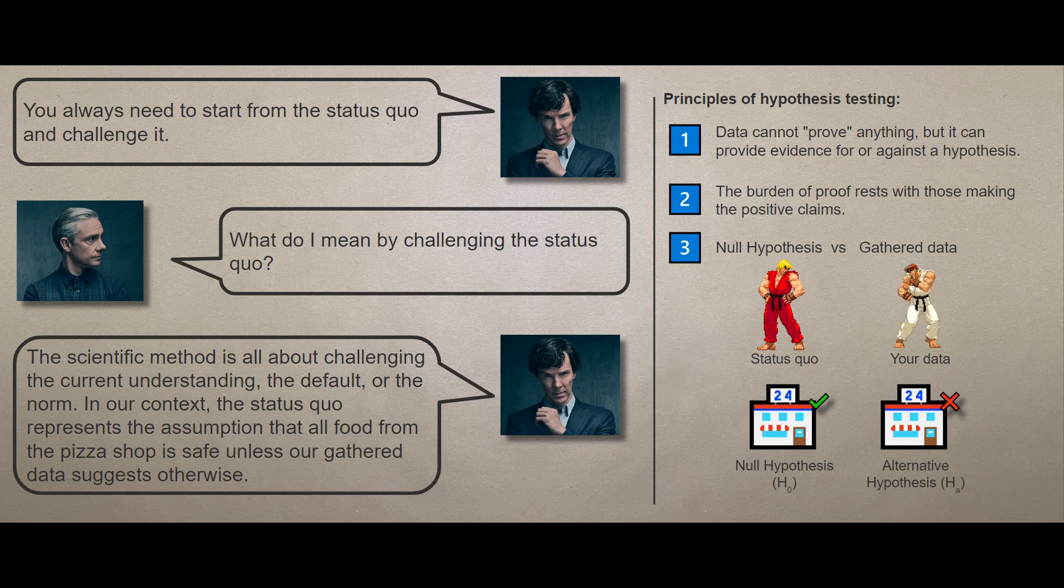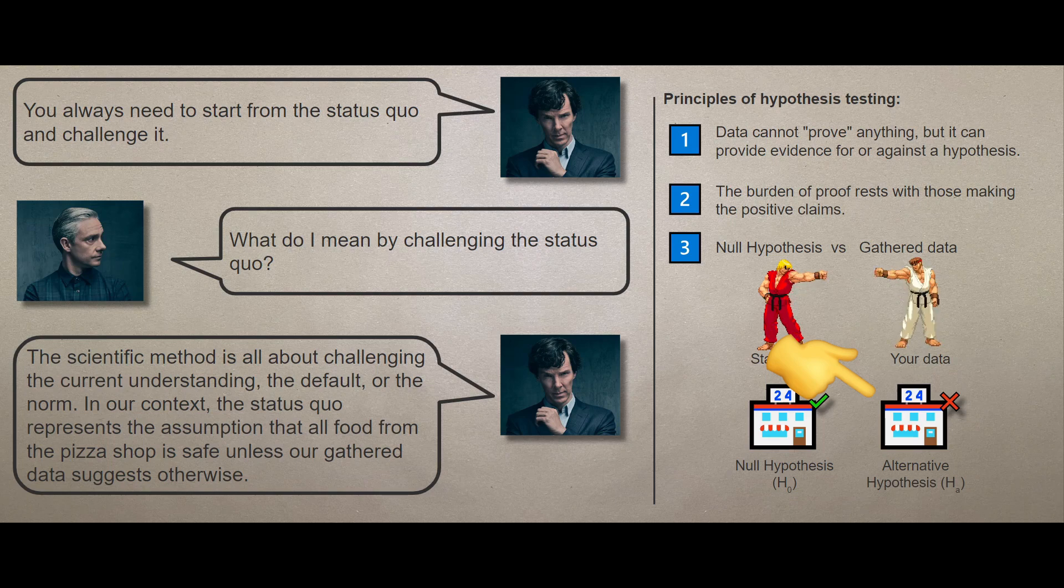By the way, the positive claim, what you want to prove, and in our case is that the food from the pizza shop is poisonous, is known as the alternative hypothesis and denoted as H-A.